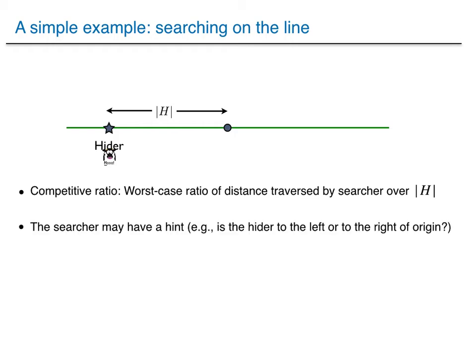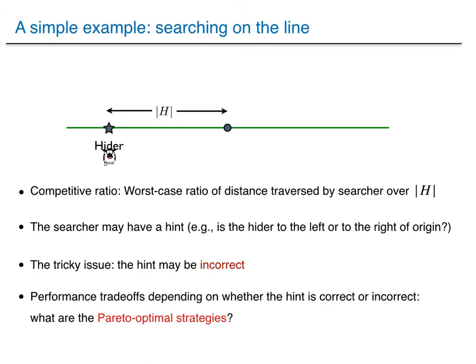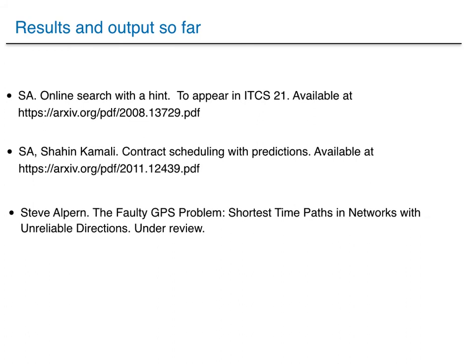However, in practice, we may have a hint. One kind of hint could be: is the hider hiding to the left or to the right of the origin? The tricky issue is that the hint may be incorrect. For instance, if the hint is the direction and the hint is correct, this is great — you get a competitive ratio equal to 1. However, if the hint is incorrect, your competitive ratio is infinite. So the performance now becomes a point on a two-dimensional space: one dimension corresponds to the case that the hint is correct, and the other to the case that the hint is incorrect. What we would like to do is essentially identify Pareto optimal strategies.